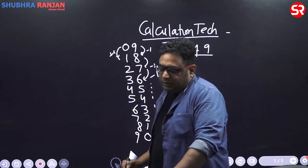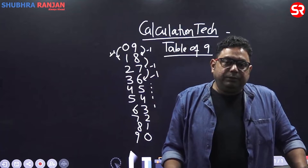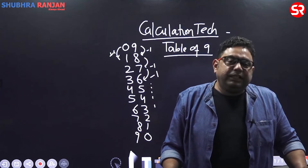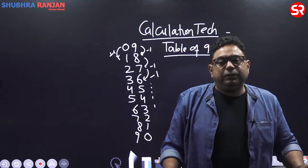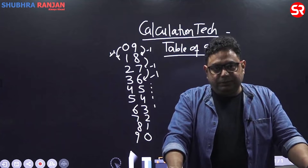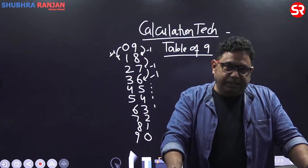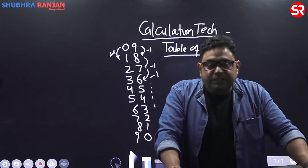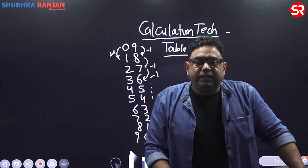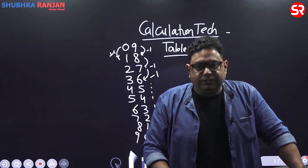Many of you might already know this. But if you know this, why can't you invent other tables? You just need to start. The trick of 9 was one pattern you started with.